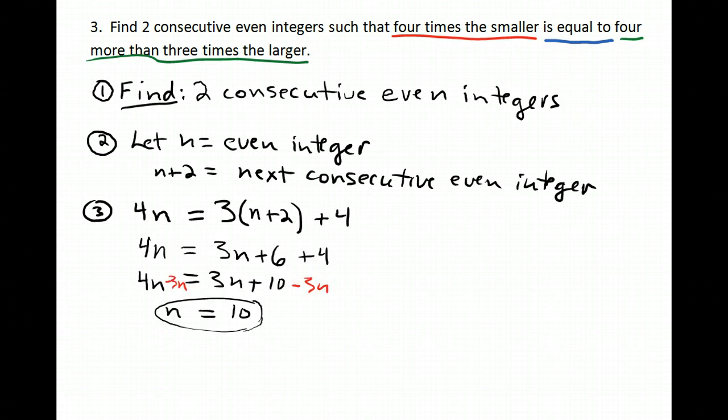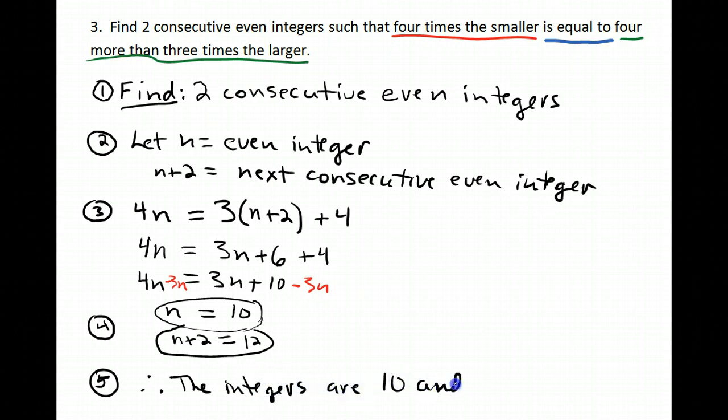Okay, I've solved my equation and I get n equals 10. Now, I also need, besides just n, I need this one, I need n plus 2. So, n plus 2 would have to be 10 plus 2, which is 12. So, those two together make up my step 4, and my step 5 would be to write my conclusion. Therefore, the integers are 10 and 12.